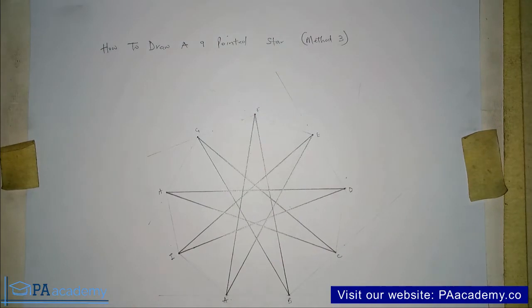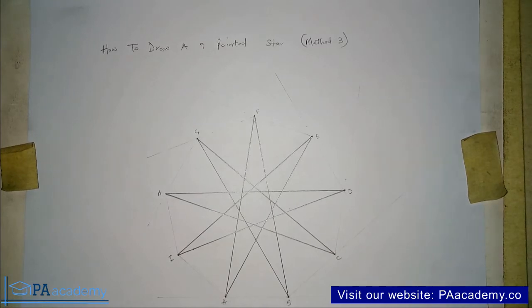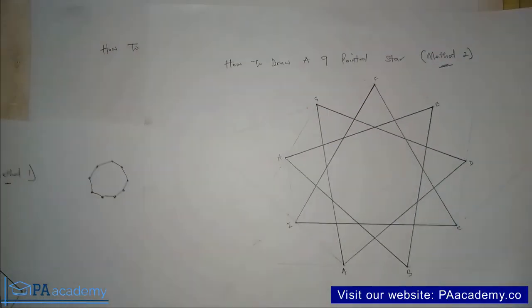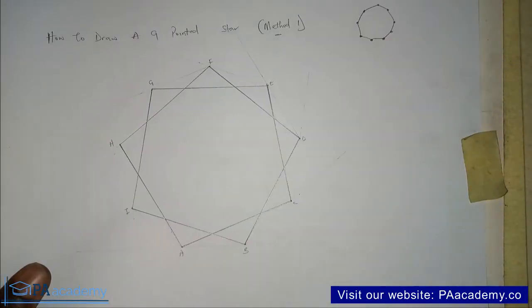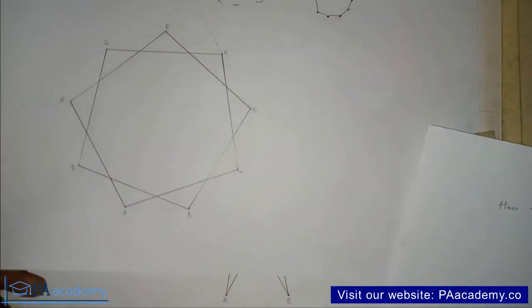So with this now, we already have our nine-pointed star. This is method three. Now let's compare what we have here with the other two methods that we looked at in the last two parts of this video. In method two, we have something like this. And then in method one, they are all nine-pointed stars, just different approaches.